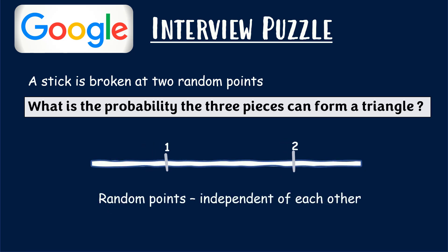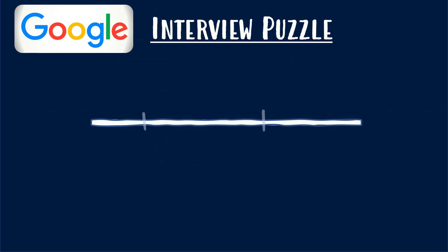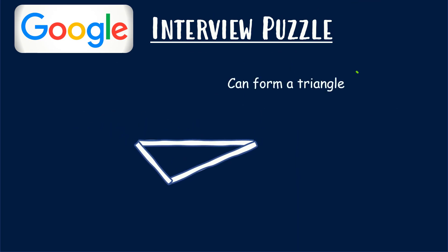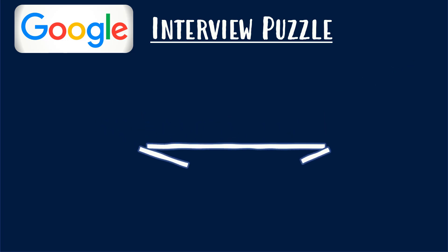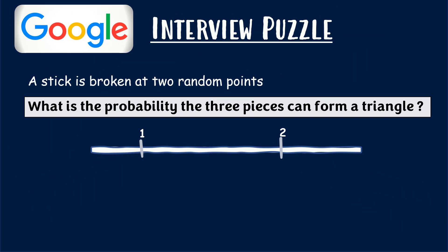The points are randomly chosen independent of each other. So it's possible that when you cut them at two random points, the pieces can form a triangle. But it's also possible they cannot form a triangle. So you have to find out the probability that they form a triangle.